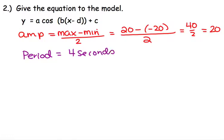So if we want to find the B, we say period equals two pi over B. We're going to substitute our four in, or P. Solve it for B.